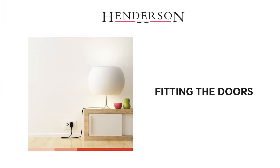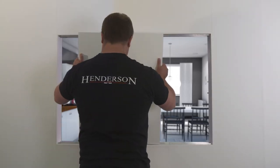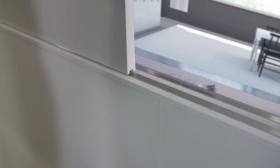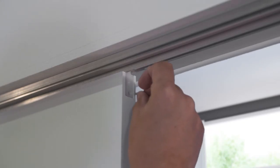Fitting the doors. Place the first door into position, ensuring it runs smoothly along the rail. Secure the top guides into place using the screw holes you prepared earlier.